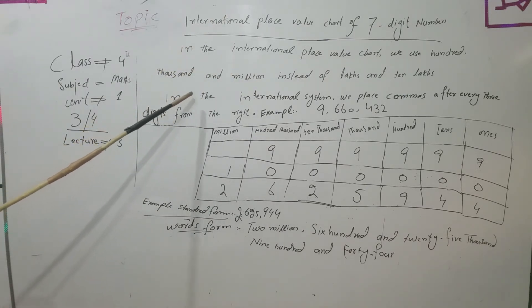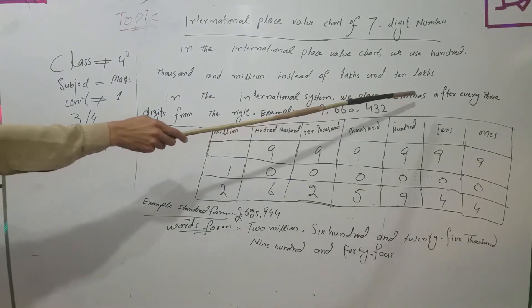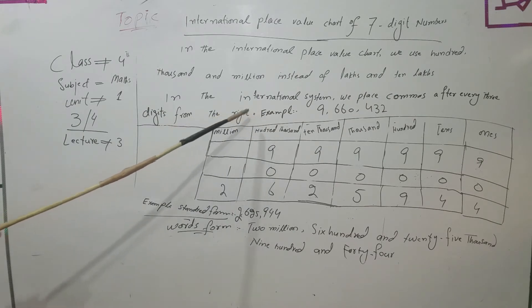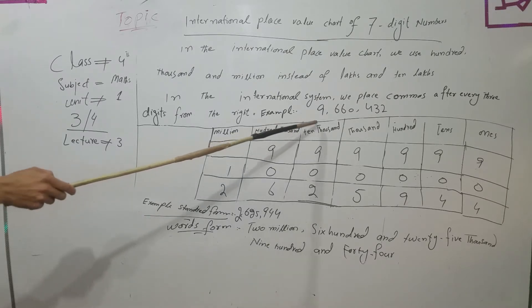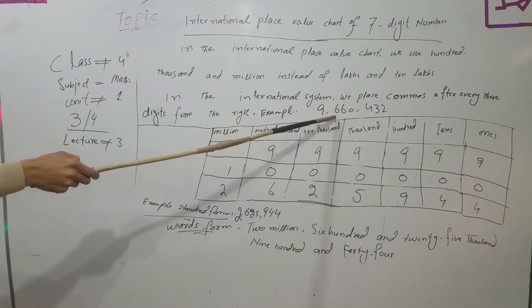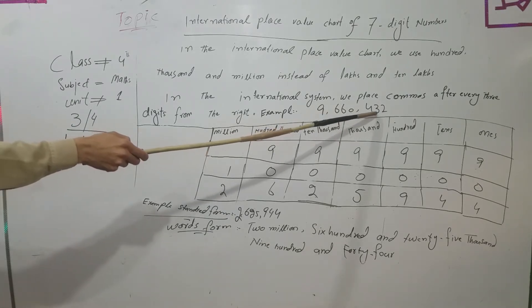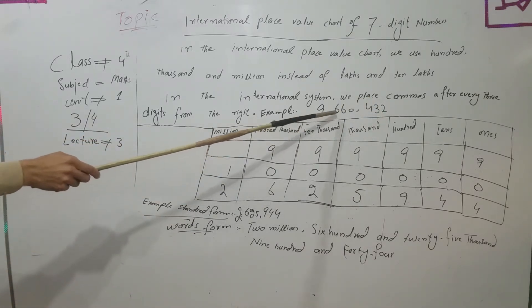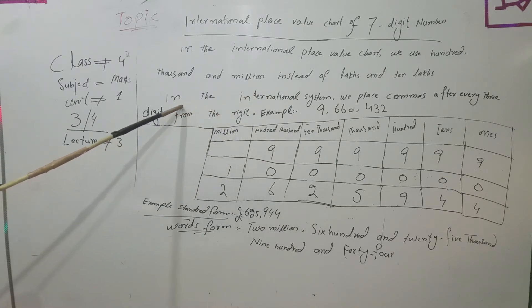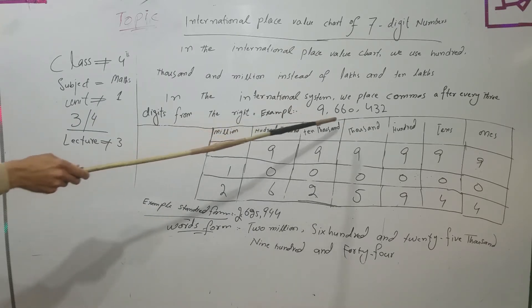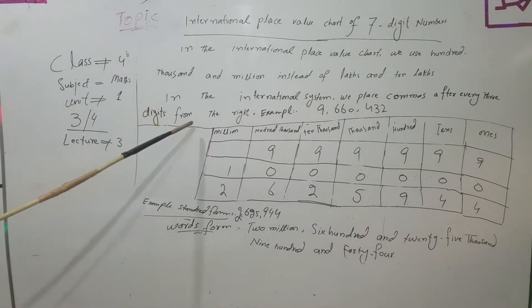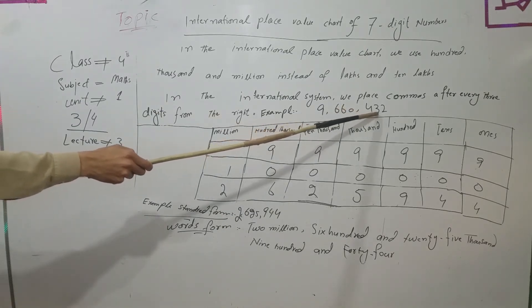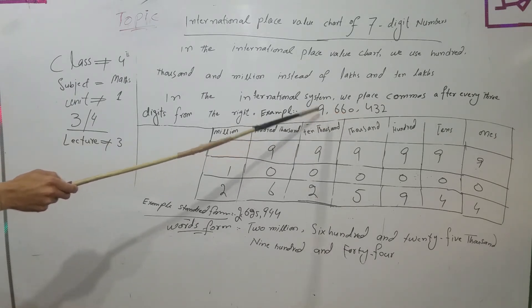In the international system, we place commas after every 3 digits from the right. For example, take the number 9,660,432. In the international system, commas are placed after every 3 digits from the right, giving us 9,660,432.